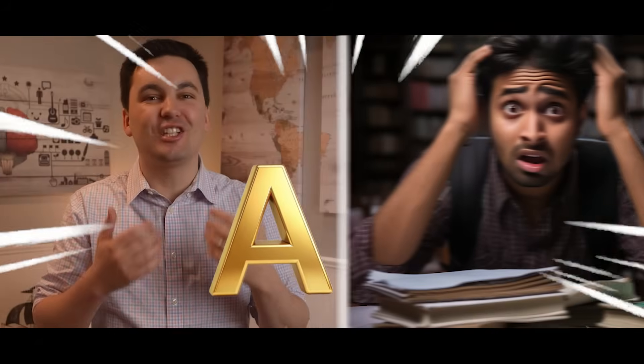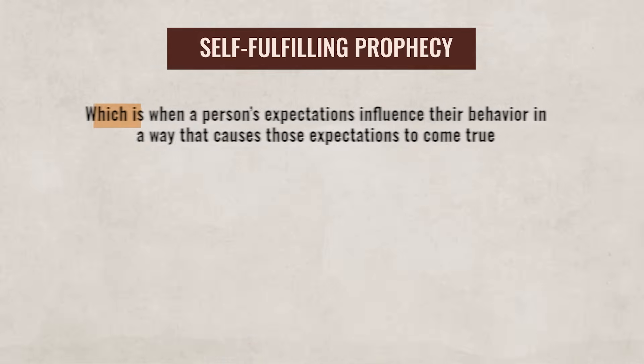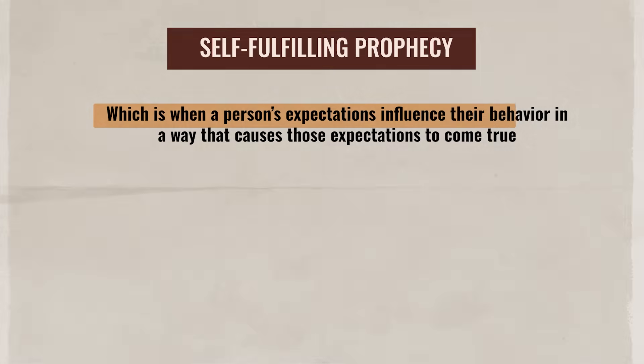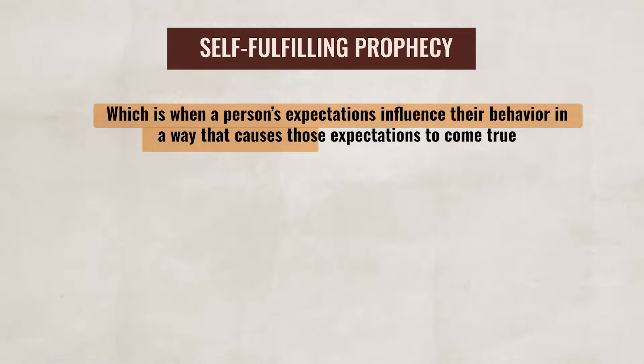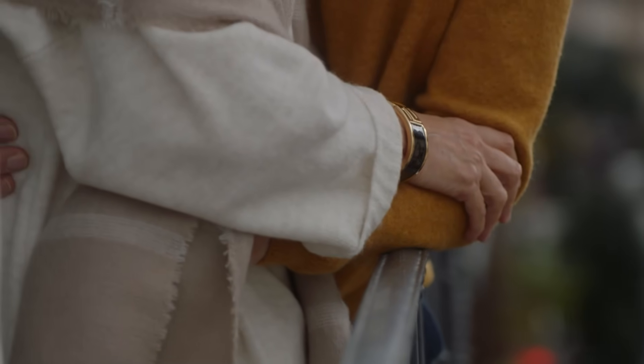Speaking of which, remember if you are struggling to get an A in your class, you can check out the ultimate review packet — one of the best resources to help you get an A and a five on the AP exam. Now another psychological phenomenon we need to review is the self-fulfilling prophecy, which is when a person's expectations influence their behavior in a way that causes those expectations to come true. This phenomenon can cause a cycle to form that ultimately impacts a person's relationships with others, their own achievements, and even a person's self-esteem.